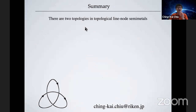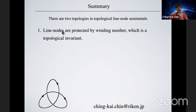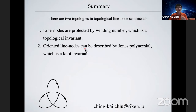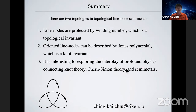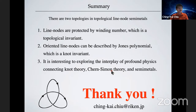Summary: We have two kinds of topology in nodal-line metals. First, the nodal line is protected by the winding number topological invariant. Second, once we have an oriented nodal line, it can be described by the Jones polynomial, which is a knot invariant. It's interesting to explore the interplay connecting condensed matter physics, knot theory, and Chern-Simons theory — a connection I don't fully understand. If anyone knows Chern-Simons theory well, please let me know — I'd love to discuss it. Thank you.